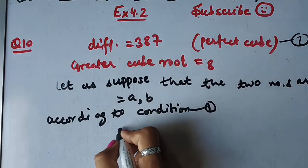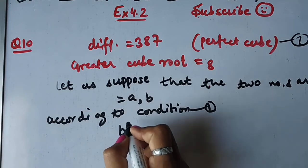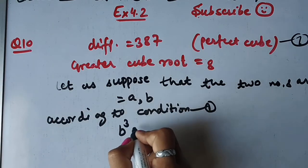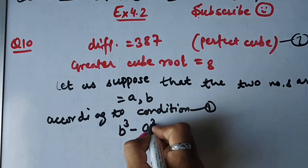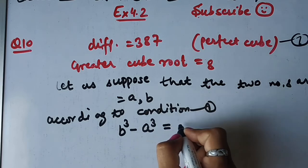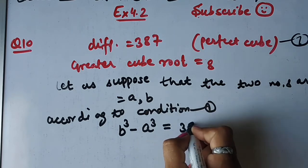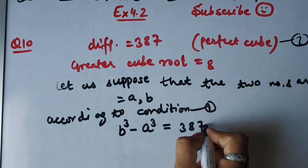Condition 1: b³ minus a³ = 387. Ab condition 2: cube root of greater number is 8. Greater number b hai. Cube root of b = 8. Matlab b = 8³. 8 ka cube: 8 × 8 = 64, × 8 = 512. Toh b = 512.